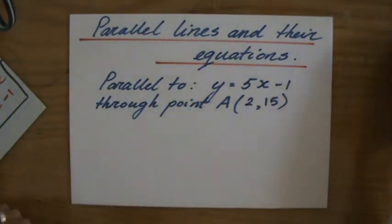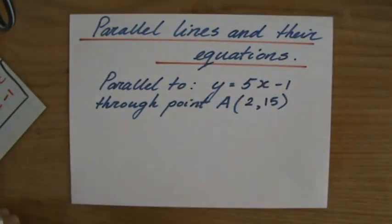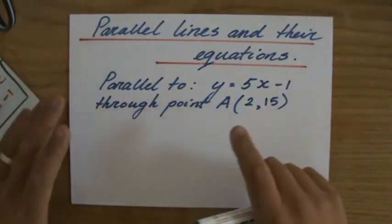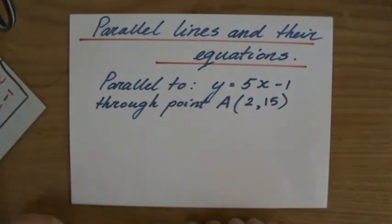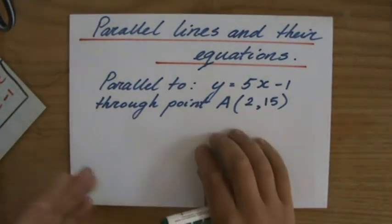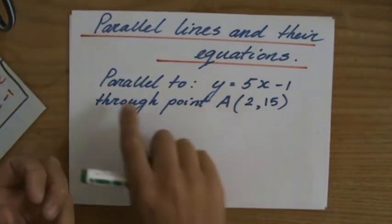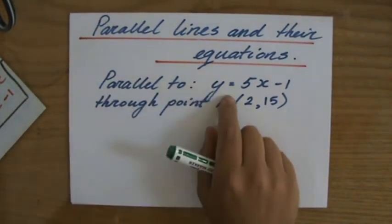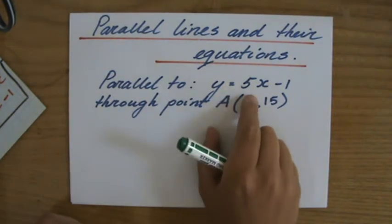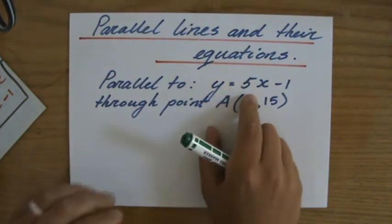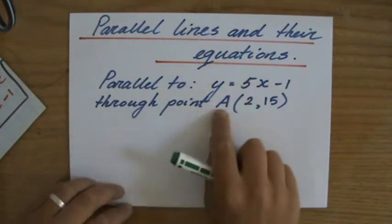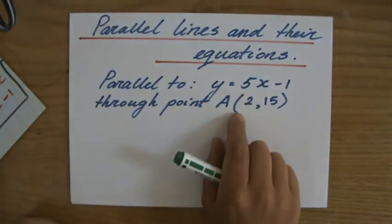We continue now with parallel lines and their equations. I will type the question as an annotation, but it's going to say: find the equation of a line which is parallel to the line y equals 5x minus 1, but also goes through point A at (2, 15).